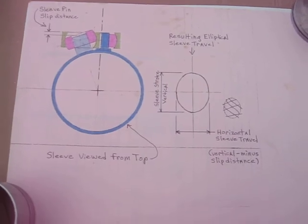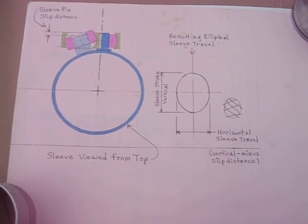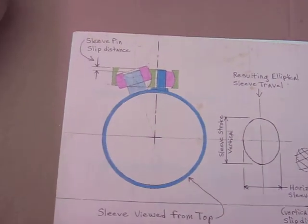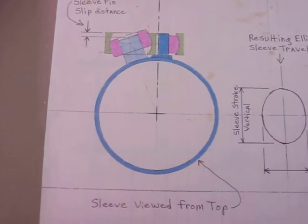So the purpose of this video is to explain why the sleeve has an elliptical motion instead of a circular one. It has to do with geometry.